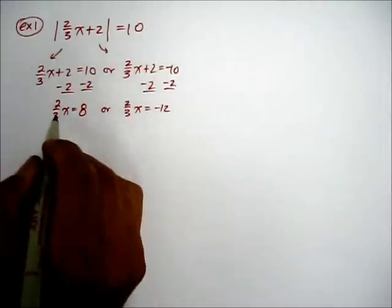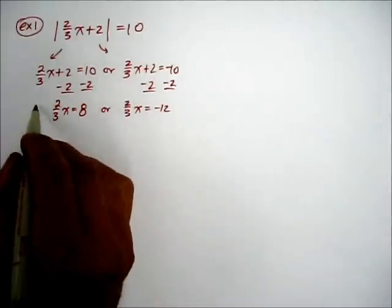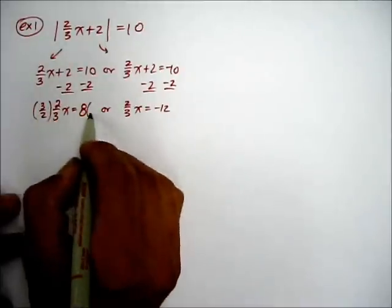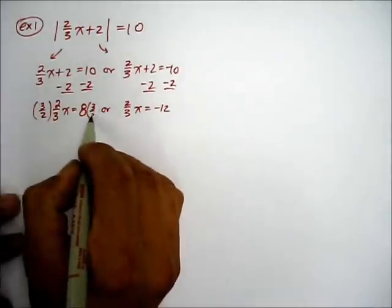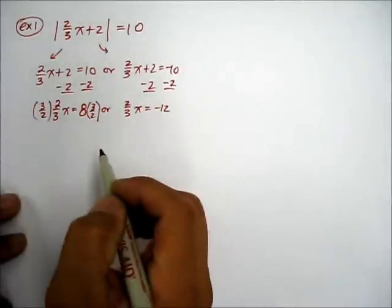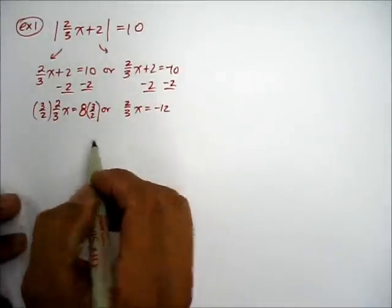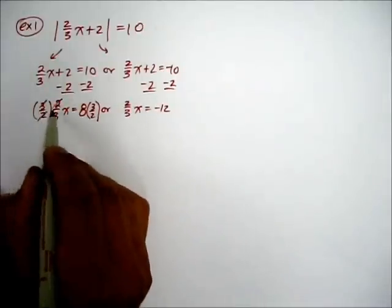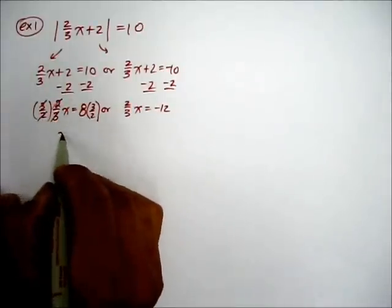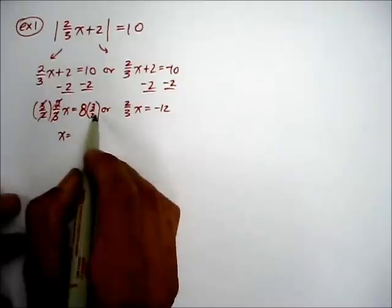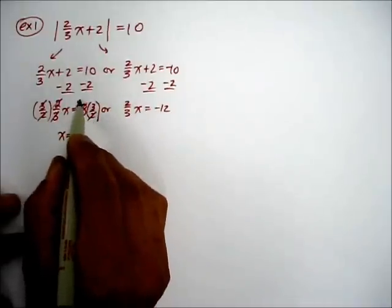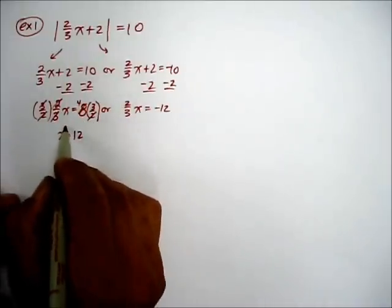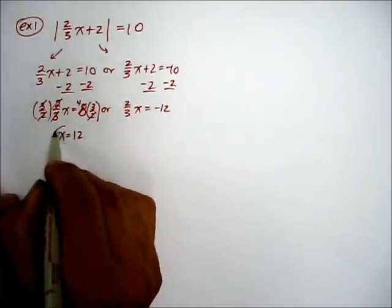Now to solve this equation, you have to multiply by the reciprocal 3/2. The coefficients cancel out. So we get x = 2 — well, 2 reduces the 8 four times, so x can equal 12.